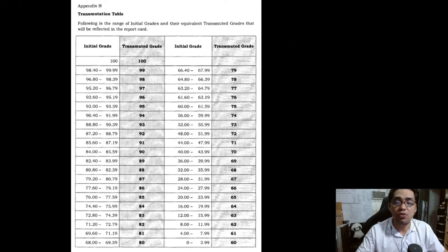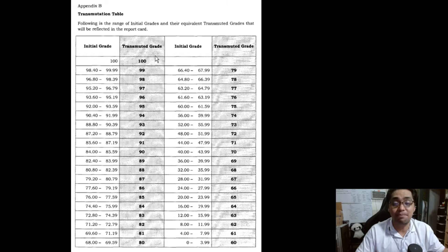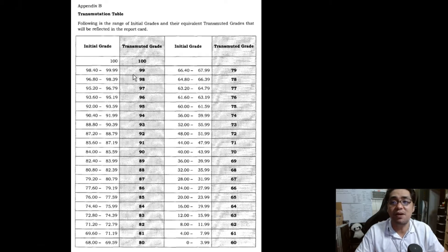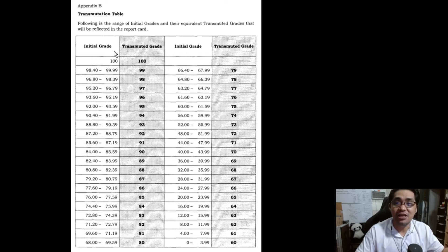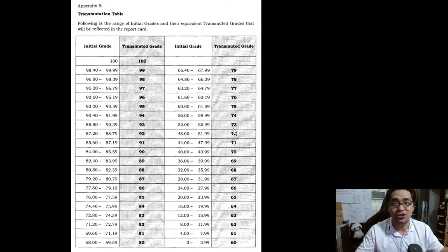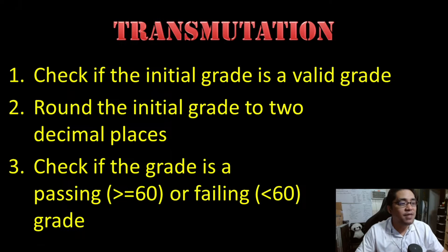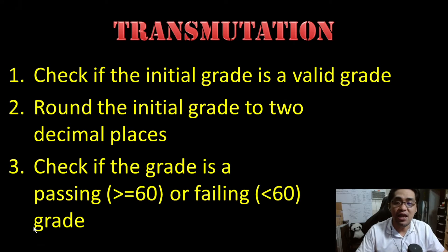Why do we have to separate the formula between passing and failing grades? Because if you check the transmutation table, the calculations are actually different. The passing transmitted grades go from 100 all the way to 75, and there is a 1.6 difference between the highest and lowest initial grade possible in each transmitted grade. When it comes to failing grades from 74 downwards, there is a four-point difference. So that is why we have to separate the calculations between passing grades and failing grades.